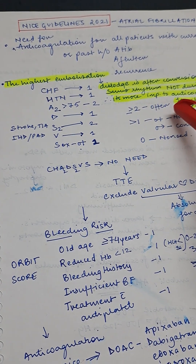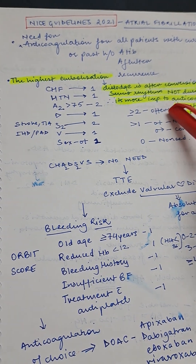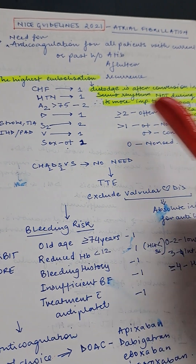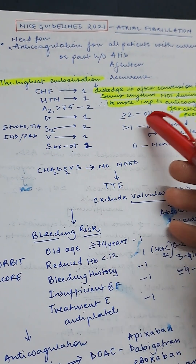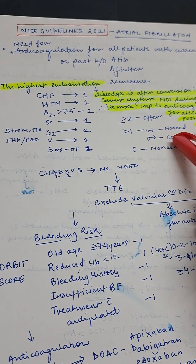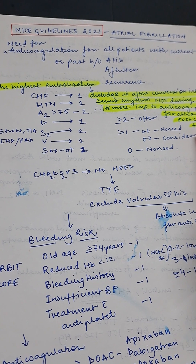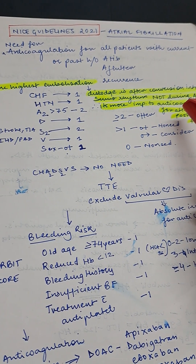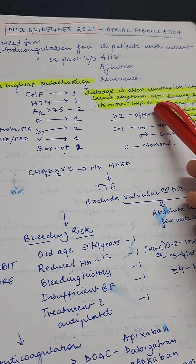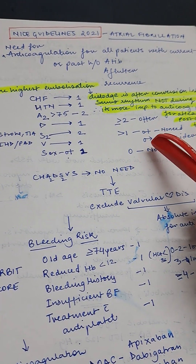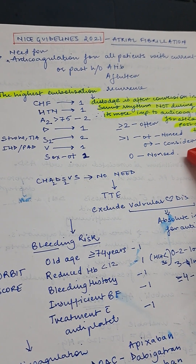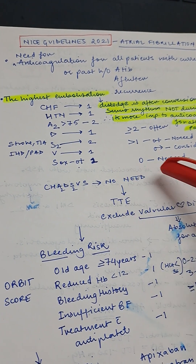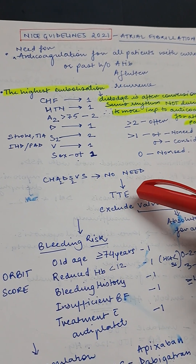Female sex carries one point. If the total score is two or more, you must offer anticoagulation. If the score is more than one but the patient is female, that one point is for their gender — so you need to consider anticoagulation carefully. A score of zero requires no anticoagulation. Understand the language in the question: 'offering' versus 'considering'.